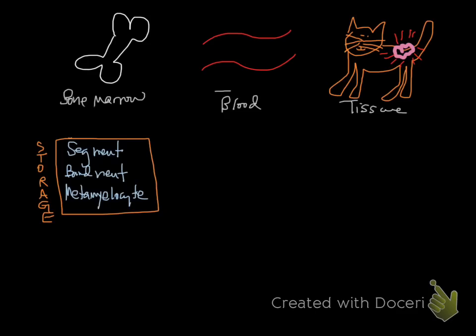Numbers of neutrophils in the blood are going to be determined by bone marrow storage and production and tissue utilization. If you have ample bone marrow production, you're going to have a neutrophilia, whereas if you have overwhelming tissue utilization of neutrophils, you're potentially going to have a neutropenia, even in the face of inflammation.